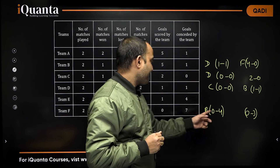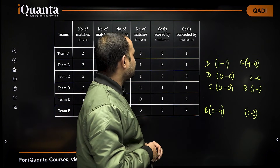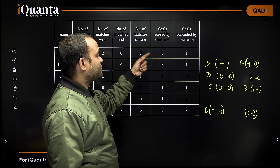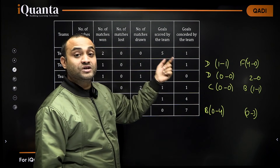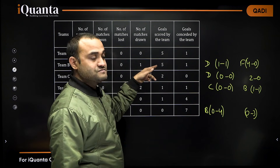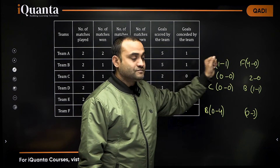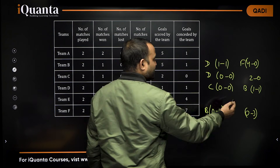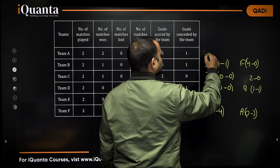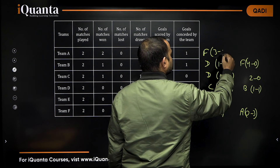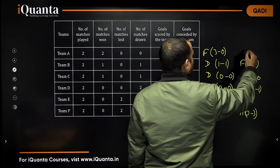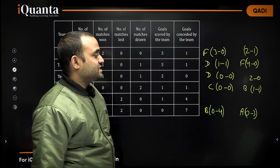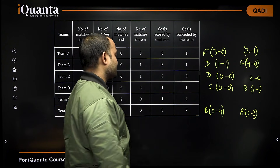In case of team F, this 0-3 means team F conceded three goals against a team. Which team could it be? It cannot be team B. We need a team who scored three or more goals — that is either A or B. We already have details for B (B versus F is 4-0). So it must be team A who won the match against F by 3-0.